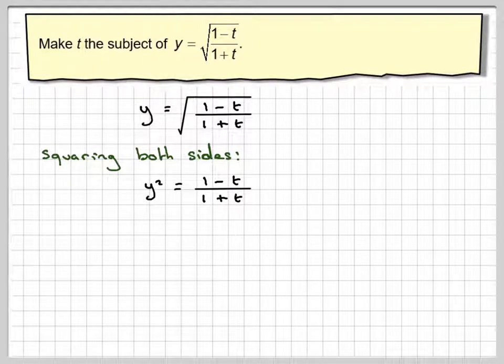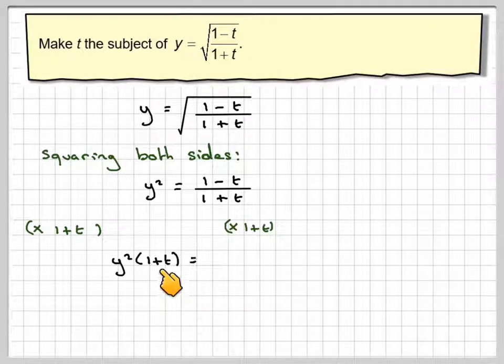And then, because we've got this in the denominator, we're going to multiply both sides by 1 plus t. We're going to get y squared times 1 plus t is equal to 1 minus t.